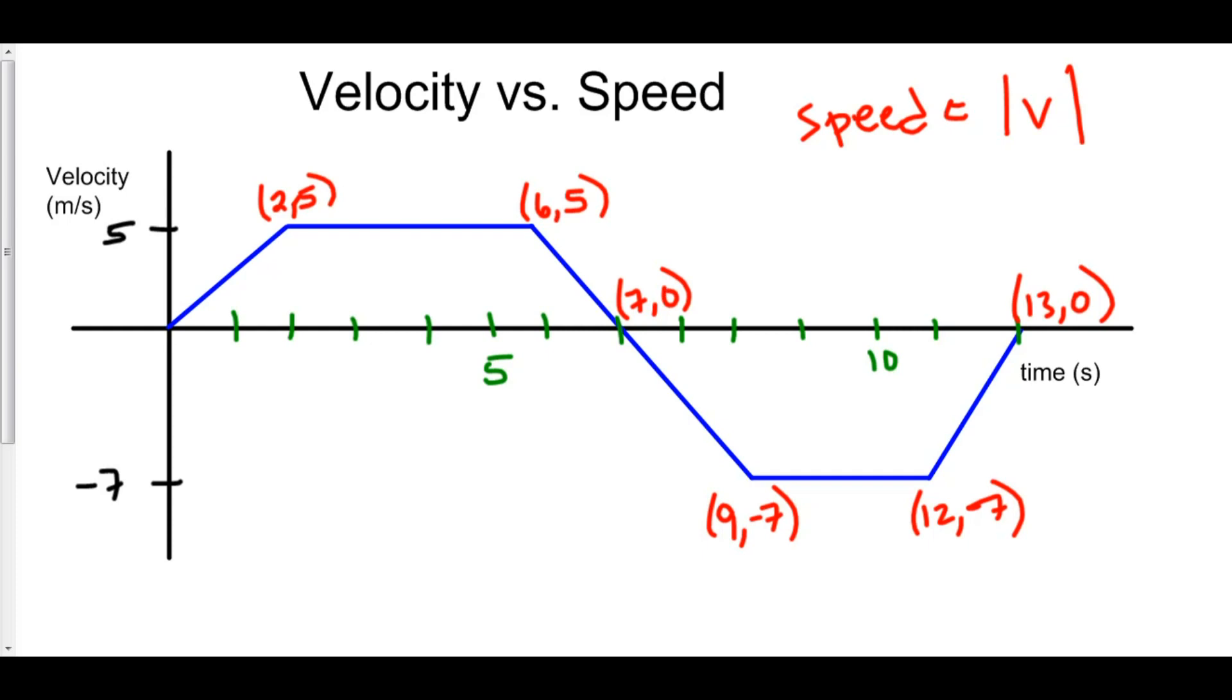However, if we wanted to graph speed, and we'll graph speed with a green line now, it would remain the same there, it would remain the same along here, and it would remain the same there.